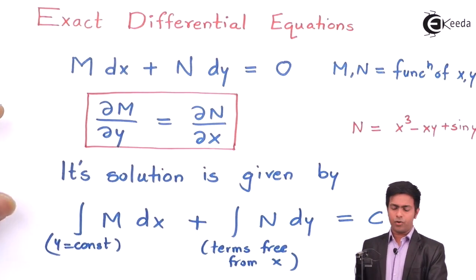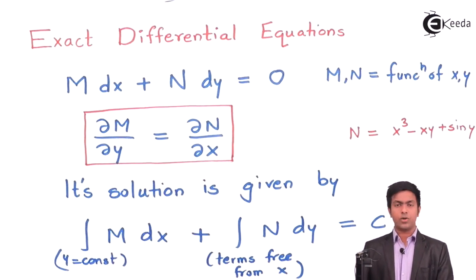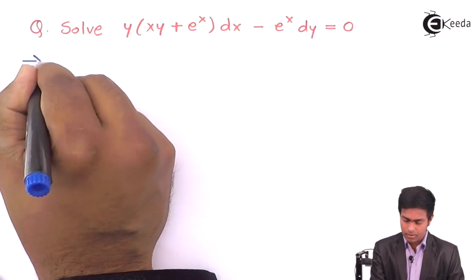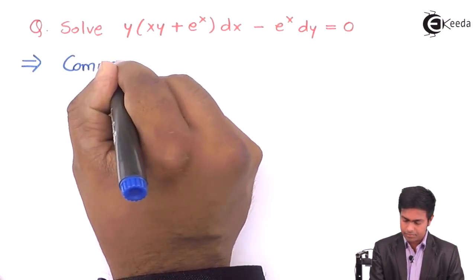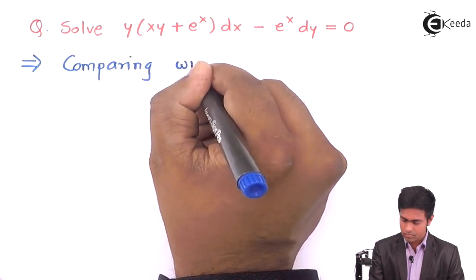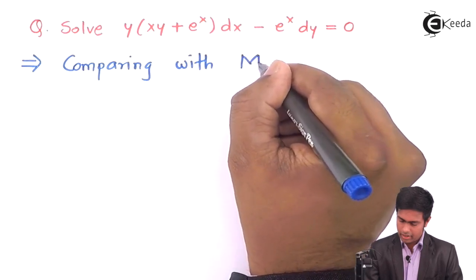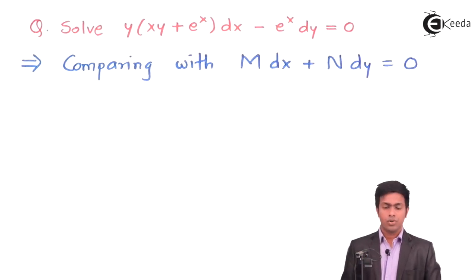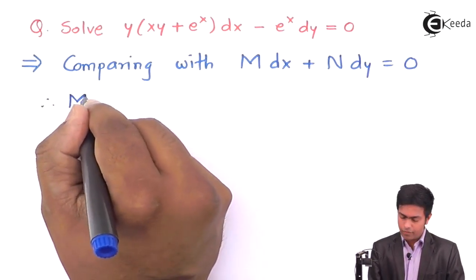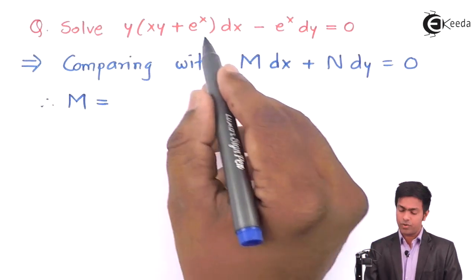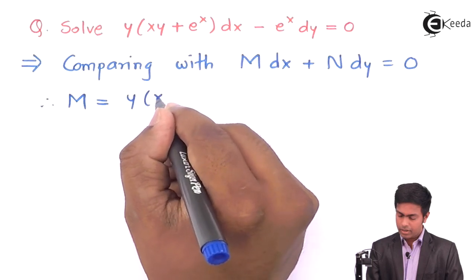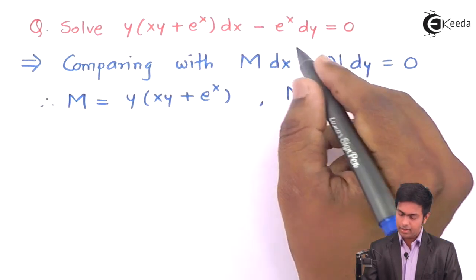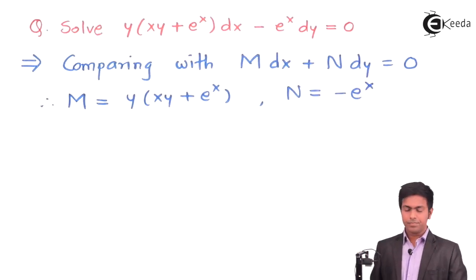First of all we need to check whether ∂M/∂y equals ∂N/∂x or not. Comparing with M dx + N dy = 0, we can see that M, the coefficient of dx, is y(xy + e^x), and the value of N is −e^x.